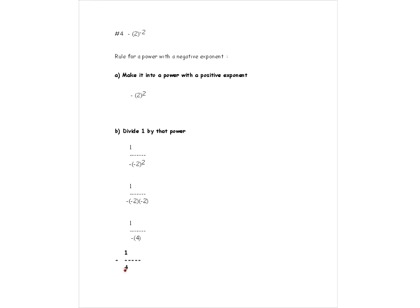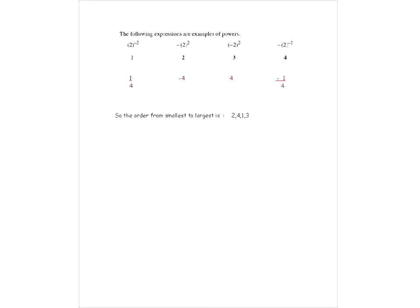Now we can compare all four numbers in their simplified forms: one quarter, minus 4, 4, and minus one quarter. Organizing from smallest to largest: the smallest is number 2 (minus 4), next is number 4 (minus one quarter), then number 1 (one quarter), and the largest is number 3 (4). So the four-digit answer is 2, 4, 1, 3.